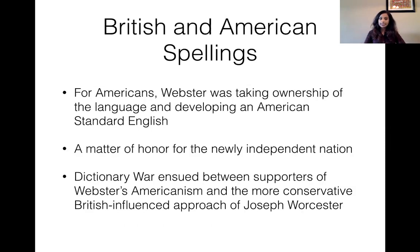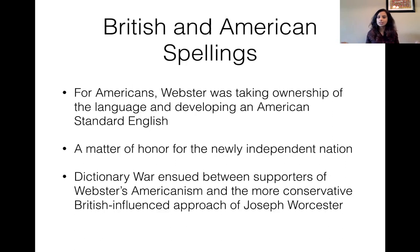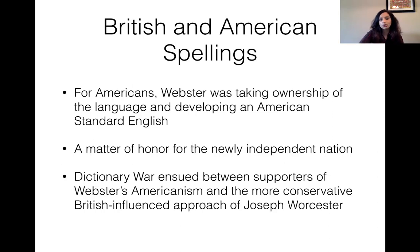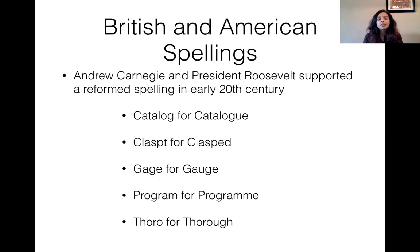Americans liked the fact that Webster was taking ownership of the language, because Americans of that era wanted their own identity — they wanted to be separate from the British who had colonized them. It was an honor for the newly independent nation. There were others with opinions about spelling too, including Joseph Worcester, who had a more conservative British-influenced approach, and there were dictionary wars between Webster and Worcester. Andrew Carnegie and President Roosevelt supported reformed spelling in the early 20th century. Some spellings Roosevelt actually reformed include: 'catalog,' 'clasped,' 'gauge,' 'program,' and 'thorough.'